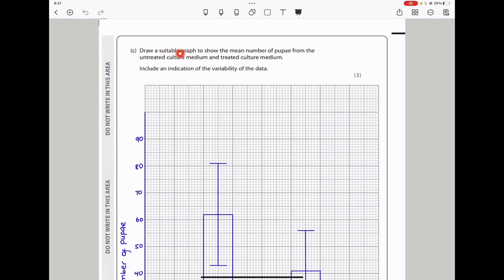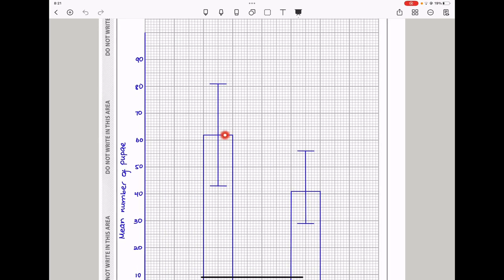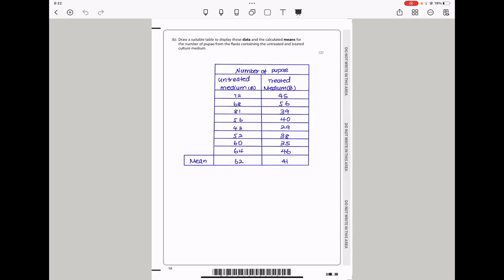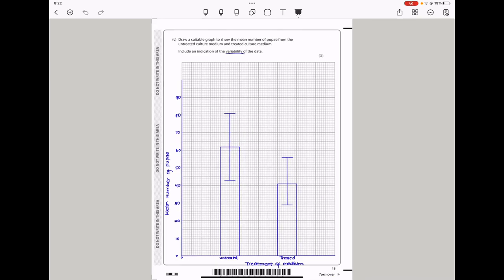Here they said draw a suitable graph to show the mean number of pupae from the untreated culture medium and treated culture medium. They wanted to include an indication of variability, meaning we need to put error bars in this dataset. I used my mean value for each, we have 62 and we have 41. You can see these are results for untreated and those are results for treated. This graph is going to have units as well as labels on both axes, and then choose a suitable scale. If you have your mean, then the lower and the higher value in each section. For the lower one here I have 43, higher one 81. As you can see on the previous page, we have 43 and then we have 81. The lower one here is going to be 29 and we have the higher one which is 56. That is how the data was presented.